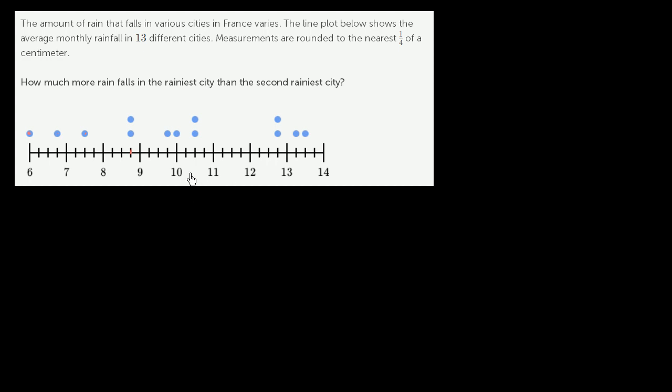Now that we understand this diagram, let's answer the question. How much more rain falls in the rainiest city? So the rainiest city here, well, there's only one city that's up here at 13 and 1/2 centimeters of rainfall.